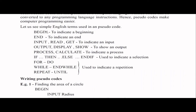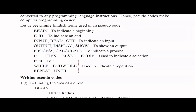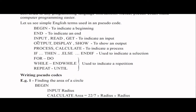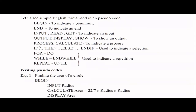For example, the start is represented by the keyword BEGIN. When you begin an algorithm, you write the BEGIN keyword — usually in caps so it's easy to identify as a keyword. Similarly, we have END to indicate the finish. For input, when getting input from the user, you can use INPUT, READ, or GET — use one consistently. For output, you can use OUTPUT, DISPLAY, or SHOW. For the processing or calculations part, you can use PROCESS or CALCULATE.